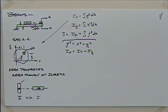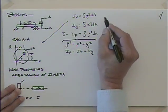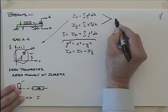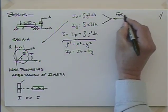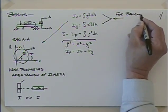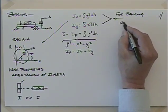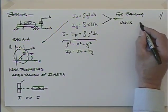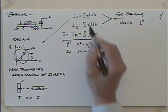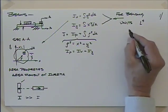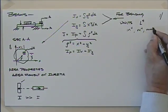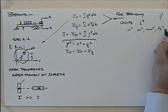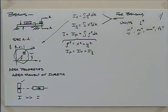So it shouldn't surprise us that the polar moment of inertia J would be equal to Ix plus Iy. So if you know Ix and Iy, add those together and you'll get the polar moment of inertia. But for most of our work, we're going to be concentrating on Ix and Iy when we're talking about bending. The units on these would be something linked to the fourth power — distance squared times area — so length to the fourth power. Probably inches to the fourth, meters to the fourth, millimeters to the fourth, or feet to the fourth.